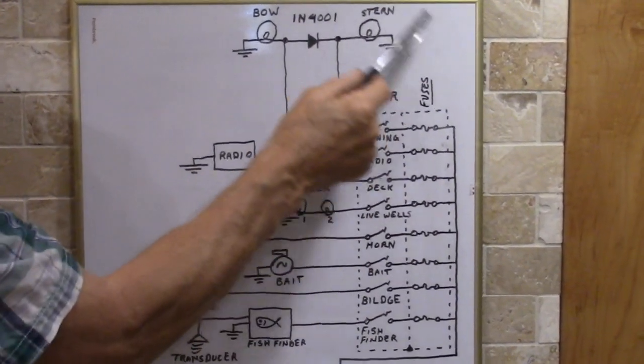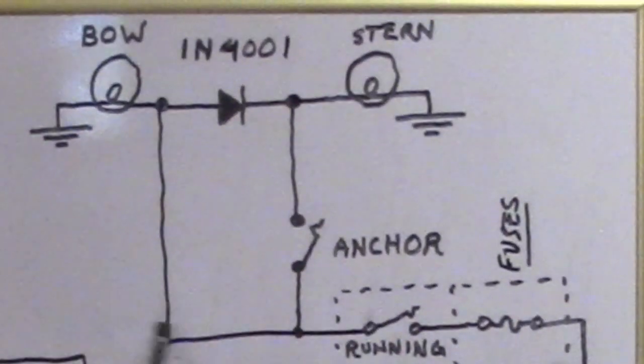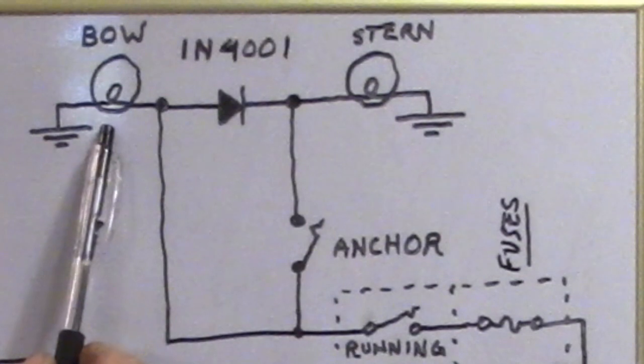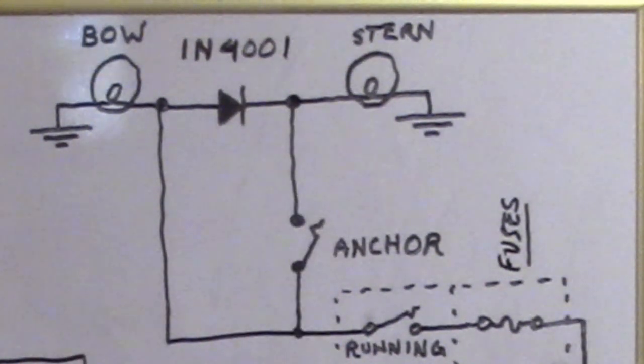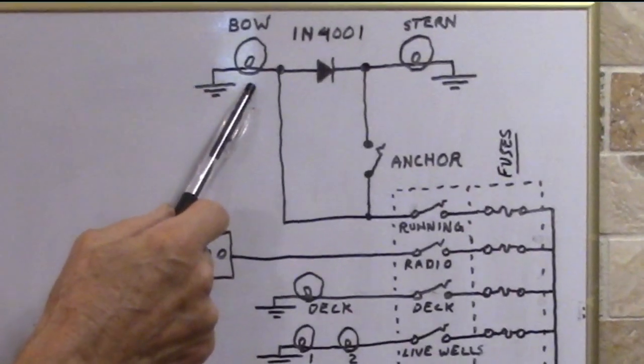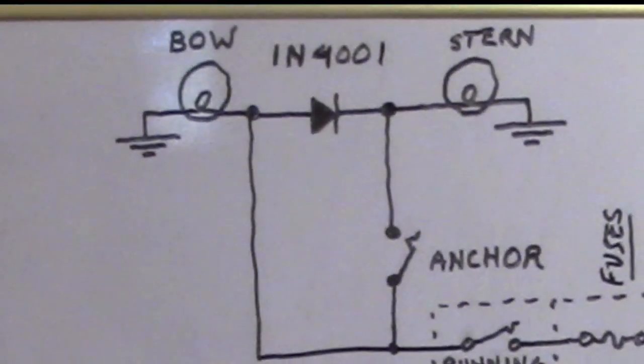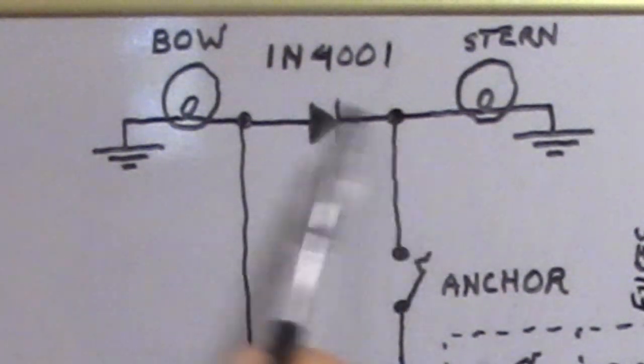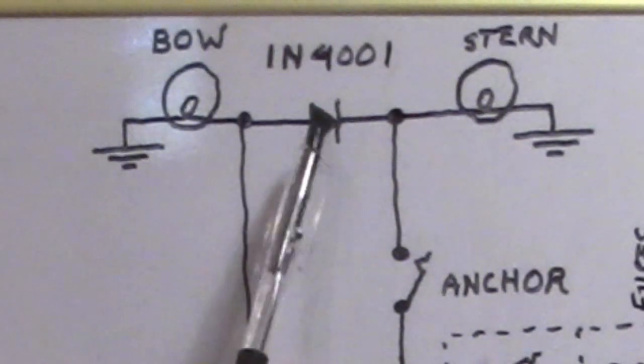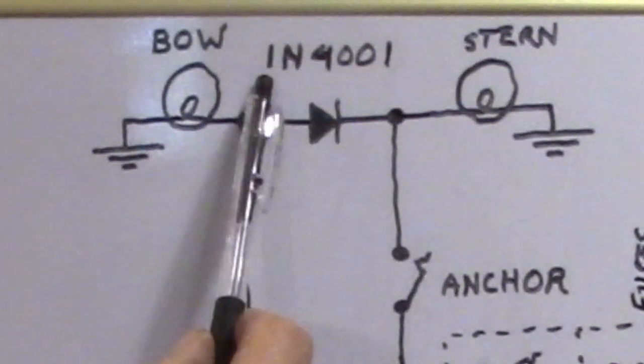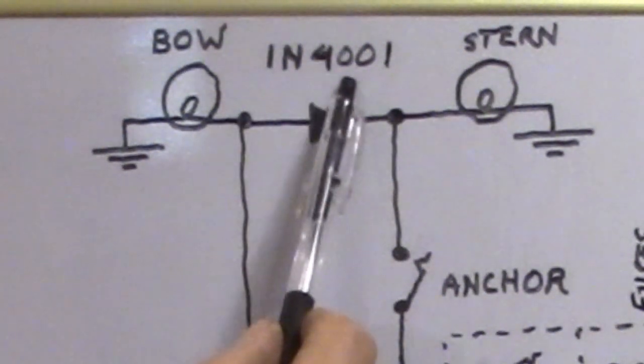Looking at this diagram, first thing I want to show you is the running lights. This switch turns on the running lights which include the red and green light on the bow and the white light on the stern. When you're at anchor you don't want your red green light on, you just want the white stern light. So this circuit here I'm using a diode as a switching device which will switch the lights either dual or just the stern light, and the diode being used is a 1N4001.